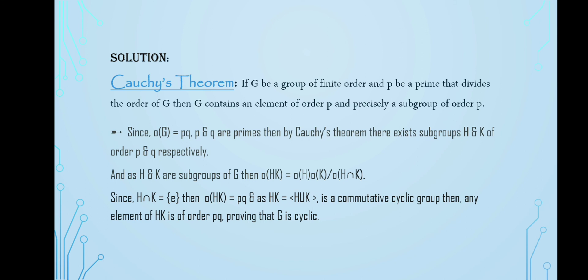And it is also said that G is a commutative group. And again, since HK is a cyclic group with the generating group H union K, then any element of HK is of order PQ. Which implies that G contains an element of order PQ.